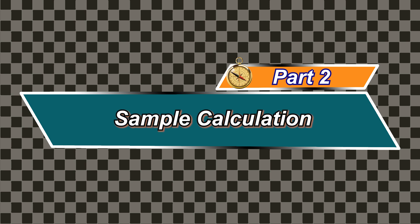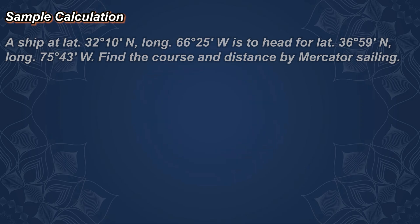Part 2: Sample Calculation. Let's solve this Mercator Sailing problem. A ship at latitude 32 degrees 10 minutes north, longitude 66 degrees 25 minutes west, is heading for latitude 36 degrees 59 minutes north, longitude 75 degrees 43 minutes west. We need to find the course and distance by Mercator Sailing.